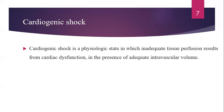Zooming in on cardiogenic shock: it is a physiologic state in which inadequate tissue perfusion occurs in the presence of adequate intravascular volume. In this type of shock there must be cardiac dysfunction, and there should always be adequate intravascular volume.